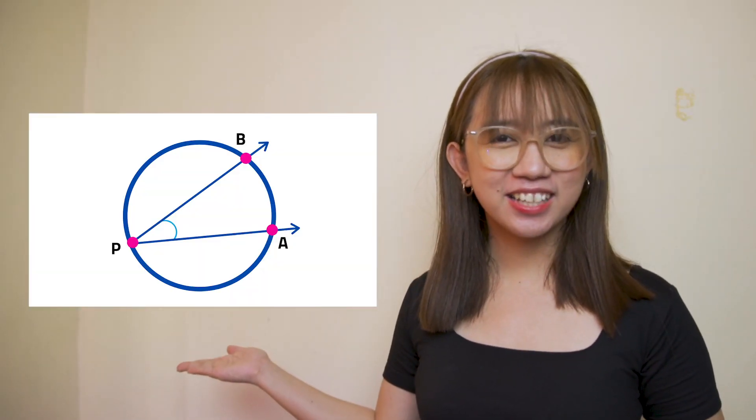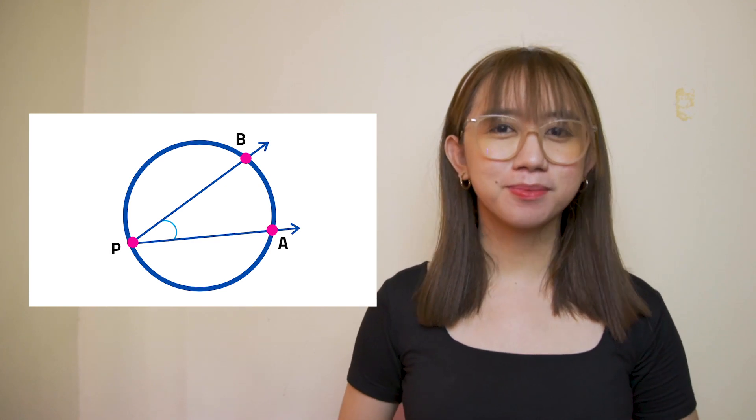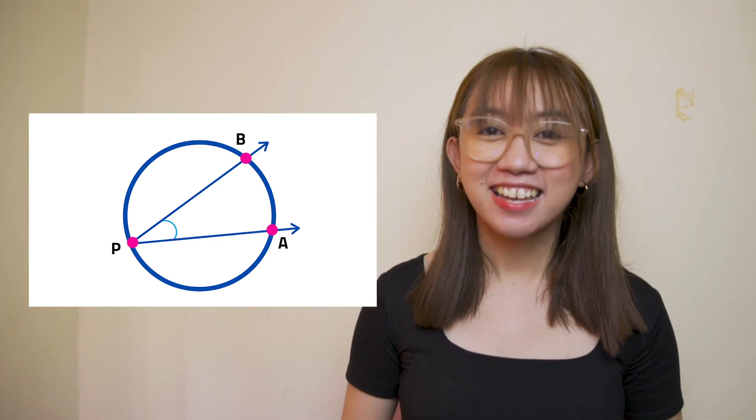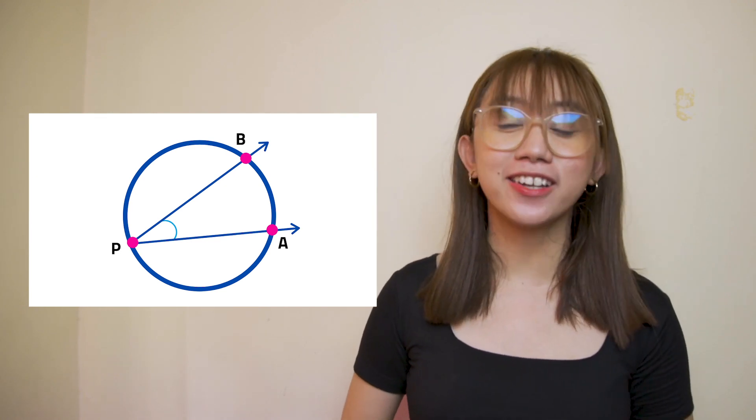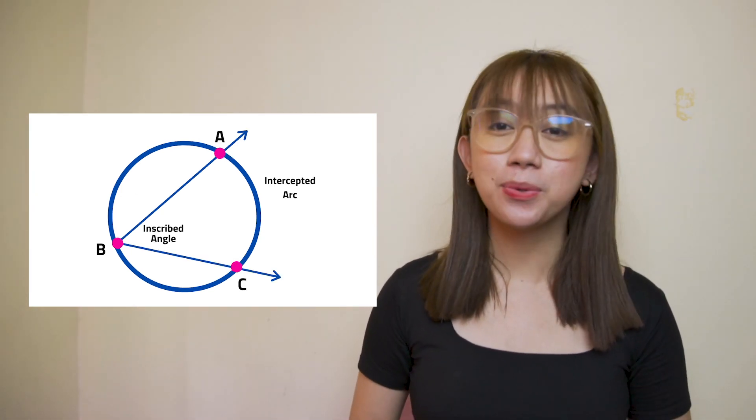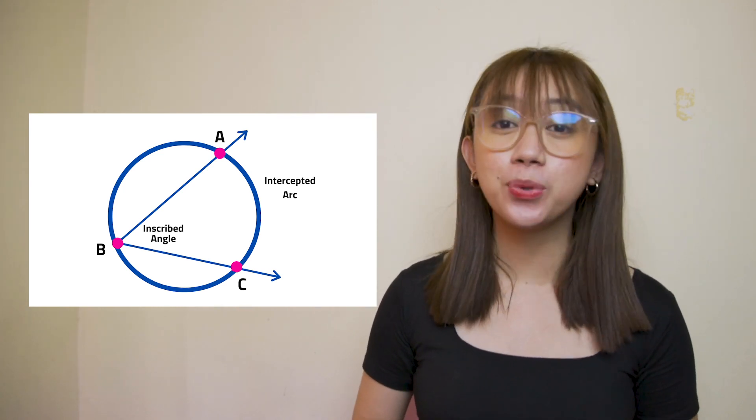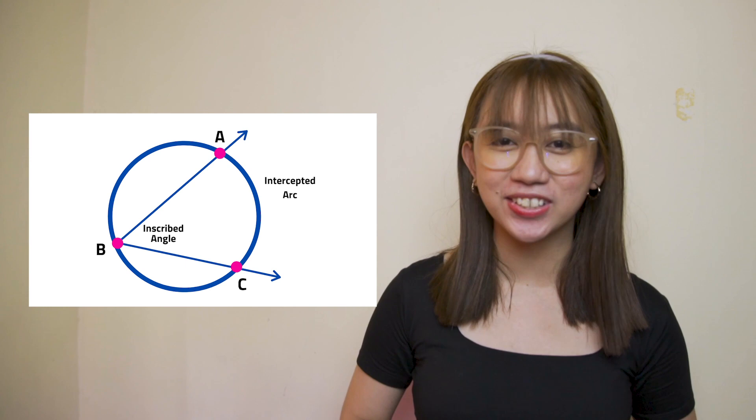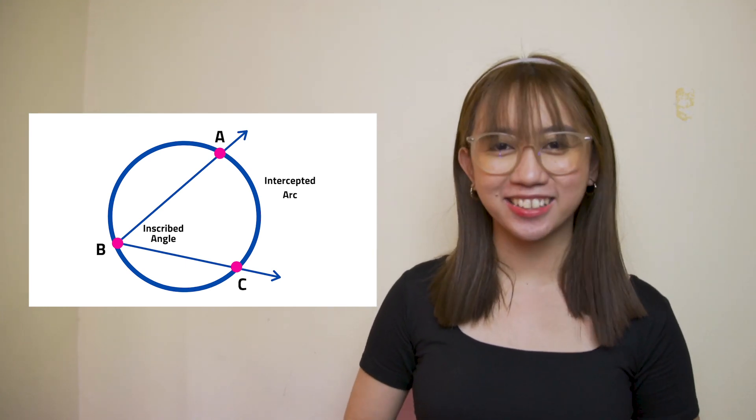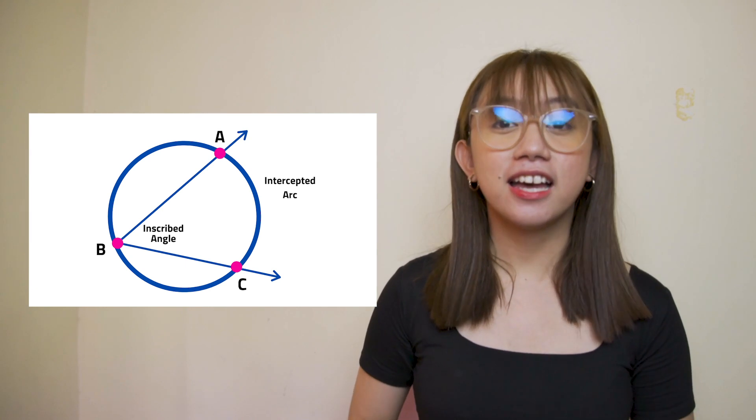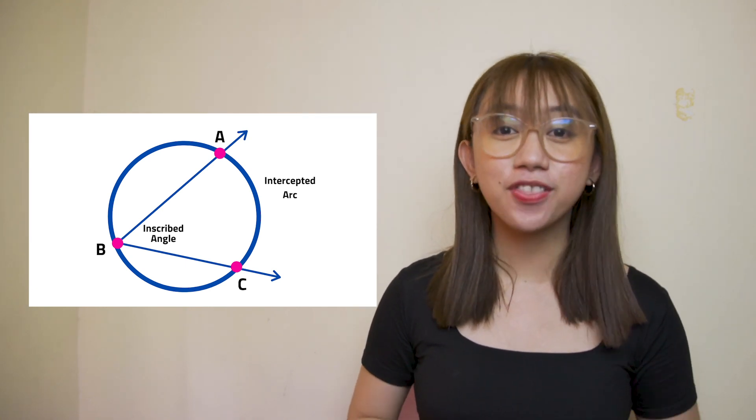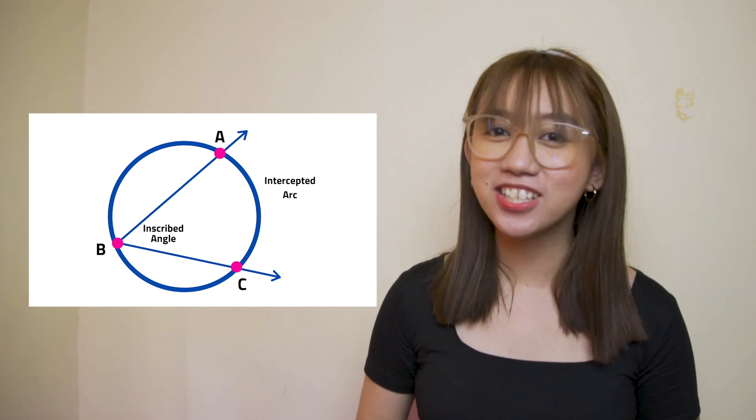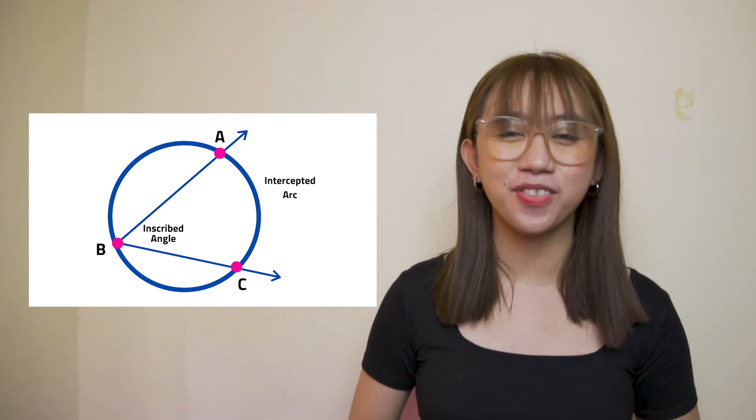Now that we know the parts of a circle, we can now proceed to the theorems related to inscribed angles and arcs. Check out this circle. What did you observe? That's correct! Angle AB intercepts arc AB. If there is an angle whose vertex is on the circle and whose rays contain chords of the circle, we will call it an inscribed angle. In general, an angle intercepts an arc if the arc is inside the angle and each ray contains an endpoint of the arc.